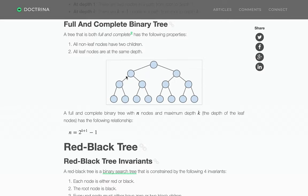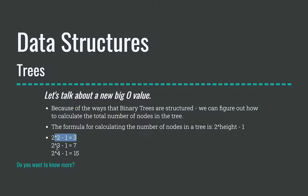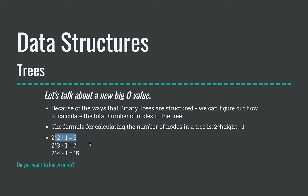So if we did a height of three — one, two, three — it would be two to the power of three minus one. Two to the power of three would be eight, minus one would be seven. That should give us our total nodes.